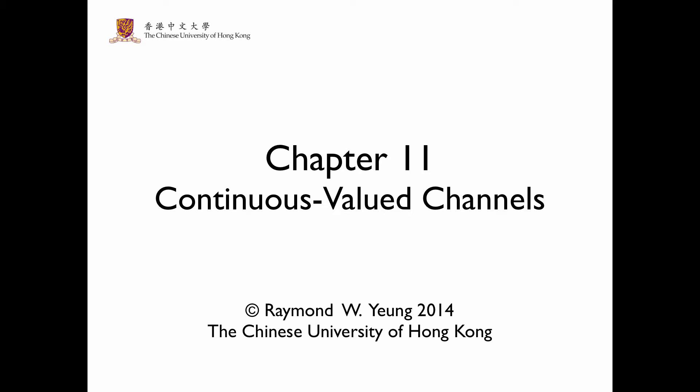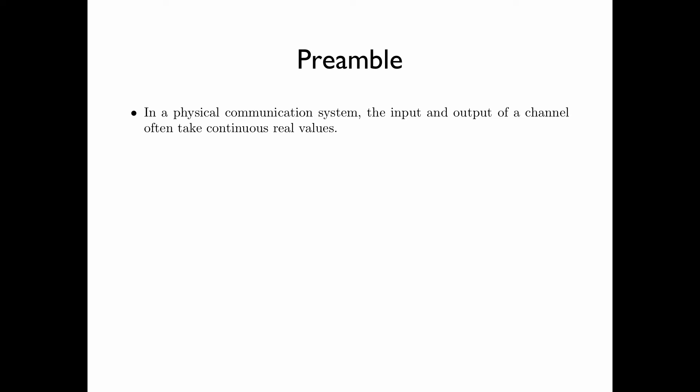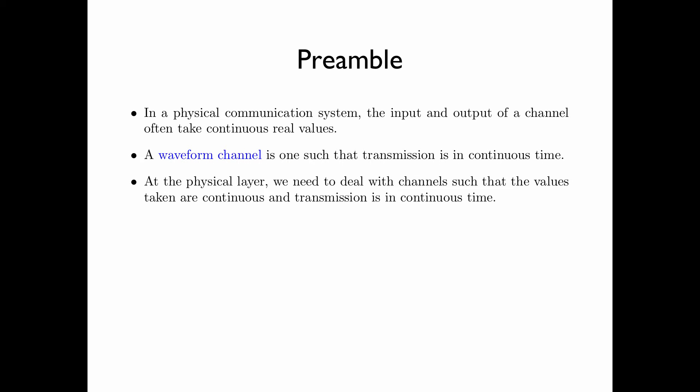In Chapter 11, we discuss continuous value to channels. Why are we interested in continuous value channels? In a physical communication system, the input and output of a channel often take continuous real values. In particular, a waveform channel — that is, a channel that takes a waveform as the input — is one such that transmission is in continuous time. Therefore, as the physical layer, we need to deal with channels such that the values taken are continuous and transmission is in continuous time.